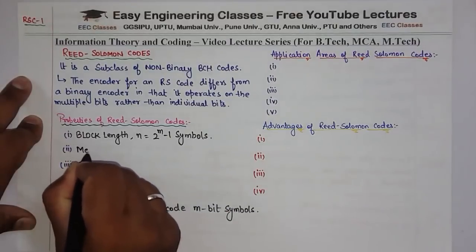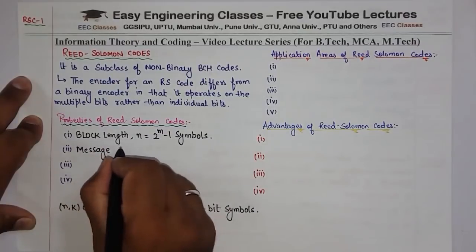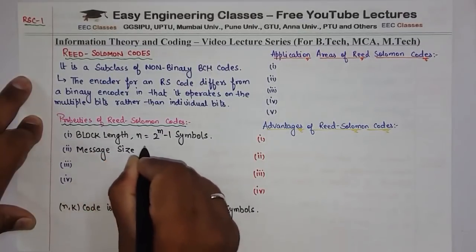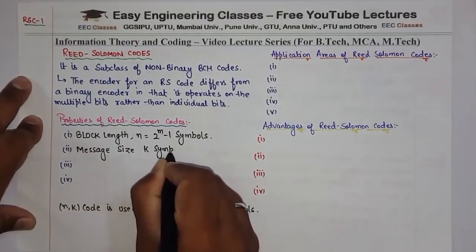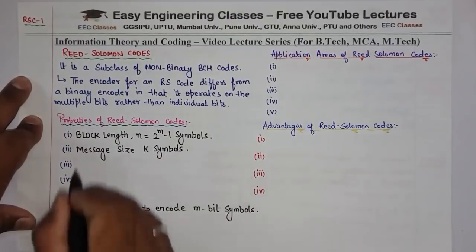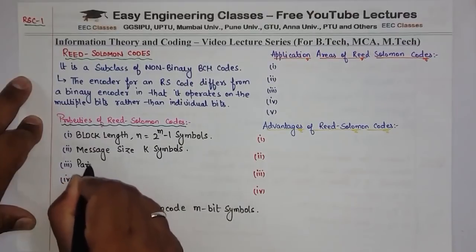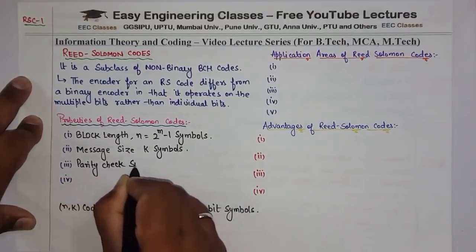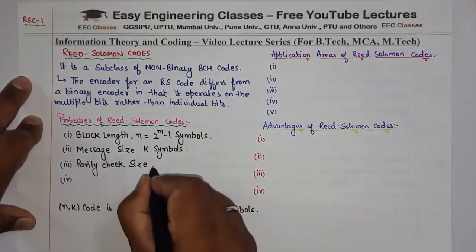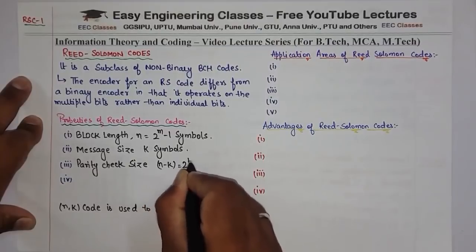Message size जो message bits है उसका size k symbols होता है। Then we have the parity check size — जो parity check bits add होती है message के साथ, वो होती है n minus k, which equals 2t symbols.